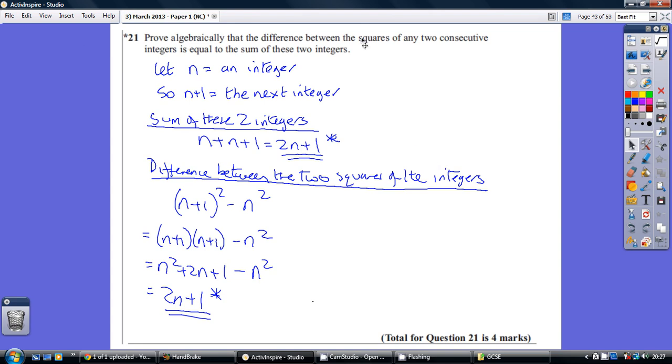Now when we've got to do a proof like this, you've got to do it in general terms. You can't just sort of take a few numbers and show it. You've actually got to prove it. So let's kick off by letting n be any old number. So n is an integer. So the next integer is n plus 1.